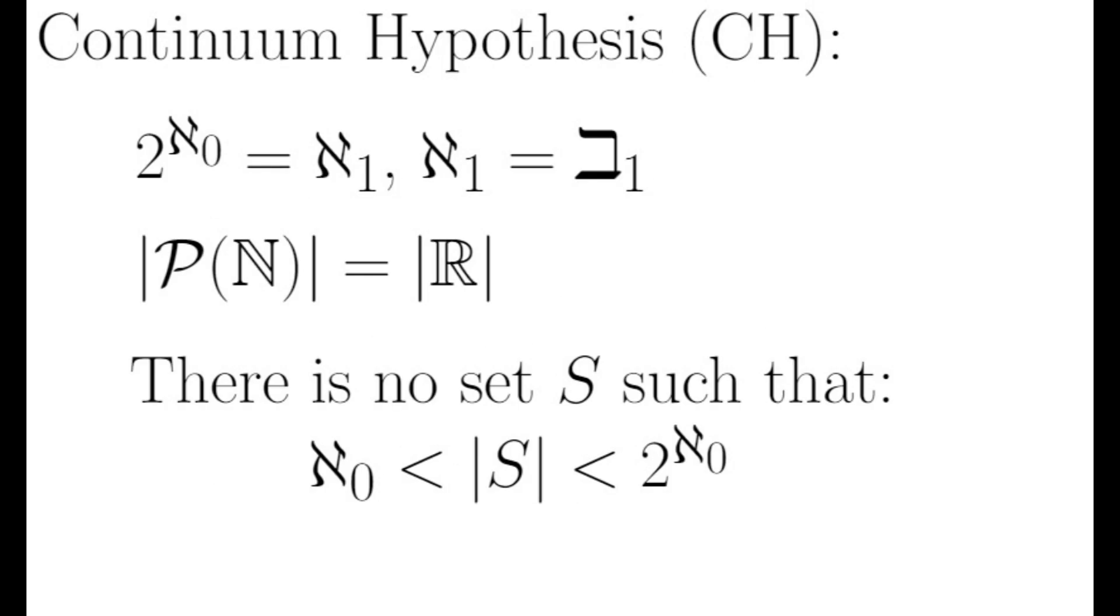A natural question to ask is, do the aleph and Beth numbers match up? We've defined aleph null to equal Beth null, but does aleph 1 equal Beth 1? Another way to ask this question is, is aleph 1 equal to 2 to the aleph null? This would mean the cardinality of the reals is aleph 1, and there is no uncountable set smaller than the reals.